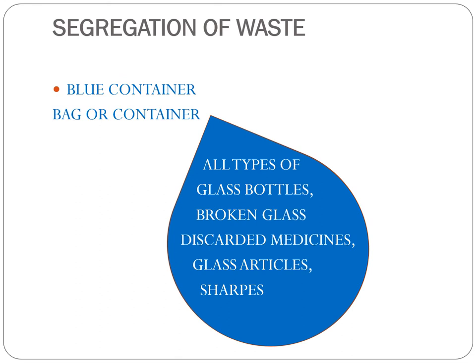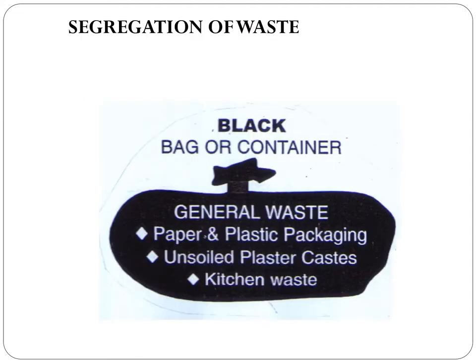The third type is segregation of waste in blue containers or blue color bags. In this type, all types of glass bottles, broken glasses, discarded medicines, glass articles, as well as sharps are segregated in blue color bags. Last, we have black color bags or containers, where all kinds of general waste — paper and plastic packaging waste, unsoiled plaster casts, as well as kitchen waste — are segregated.